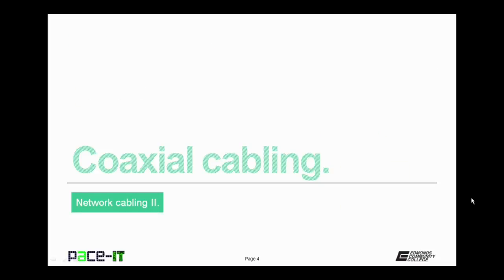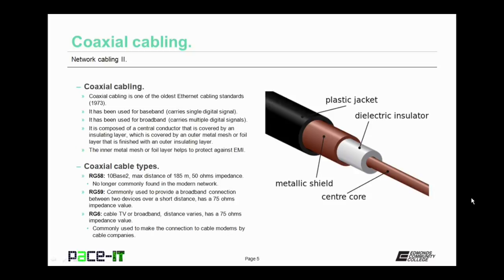We're going to begin by talking about coaxial cabling. Coaxial, or coax cabling, is one of the oldest Ethernet standards for network cabling. It was standardized in 1973. It's been used for baseband, carrying just a single digital signal, and it has been used for broadband, carrying multiple digital signals. It is composed of a central conductor covered by an insulating layer, then an outer mesh or foil layer, finished off with an outer insulating layer. That inner metal mesh layer helps to protect against electromagnetic interference, EMI.